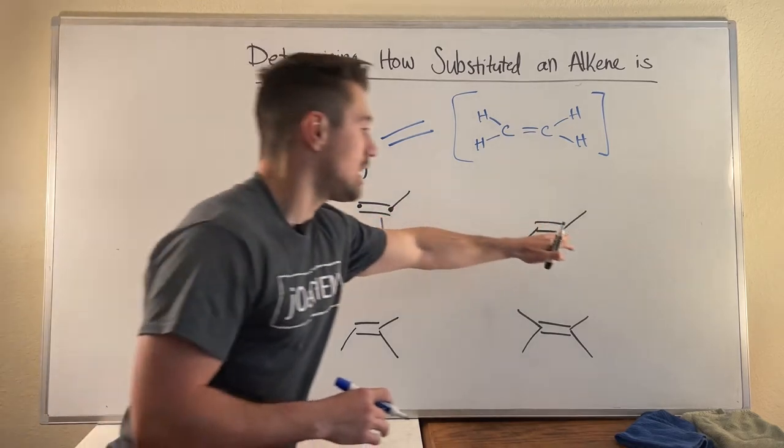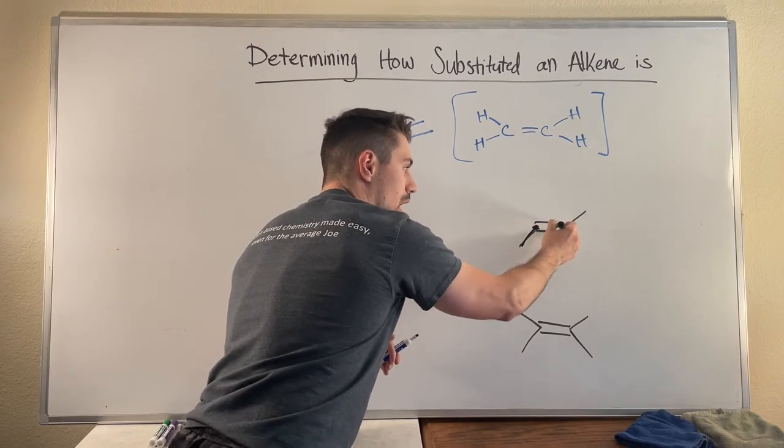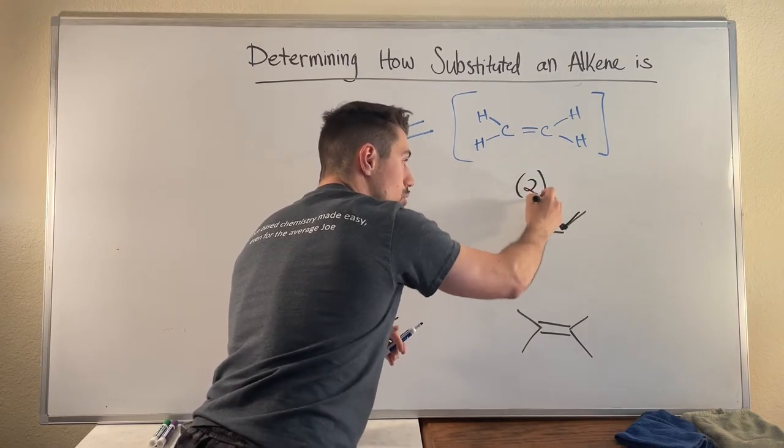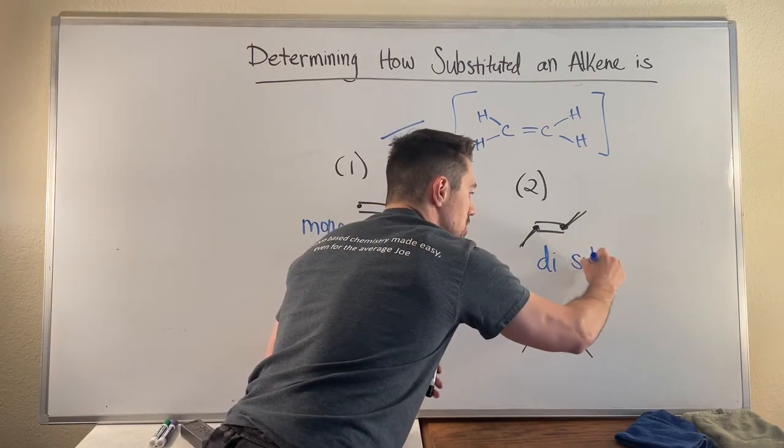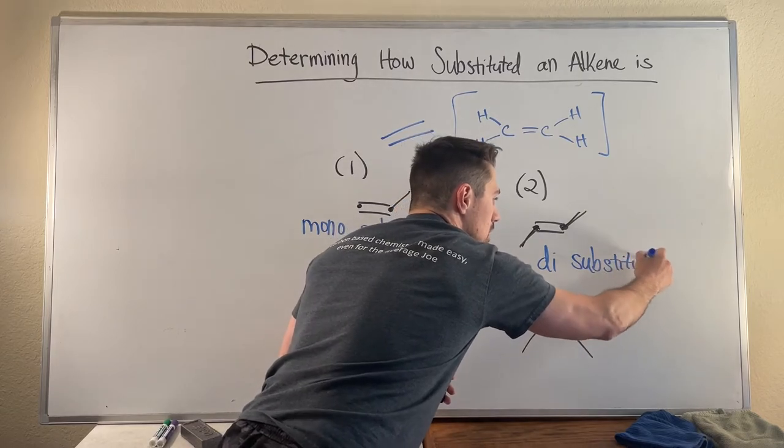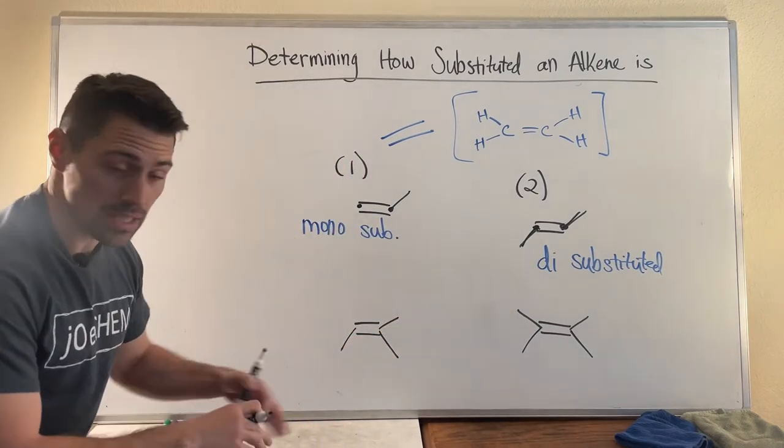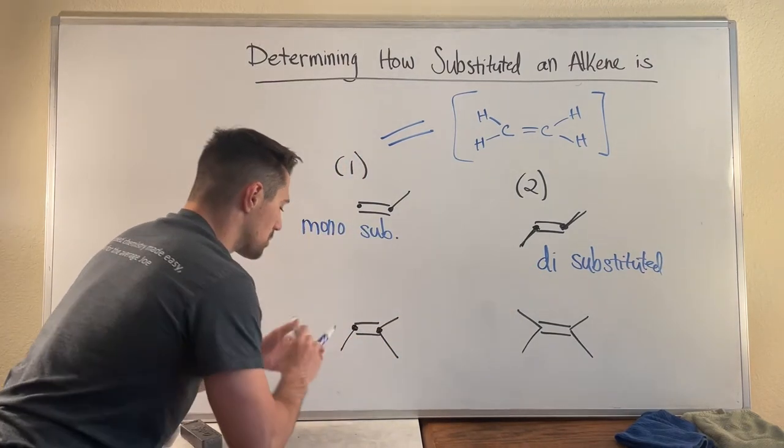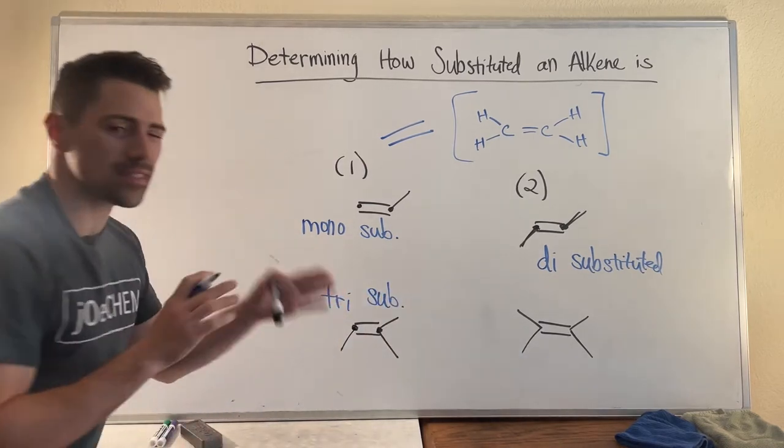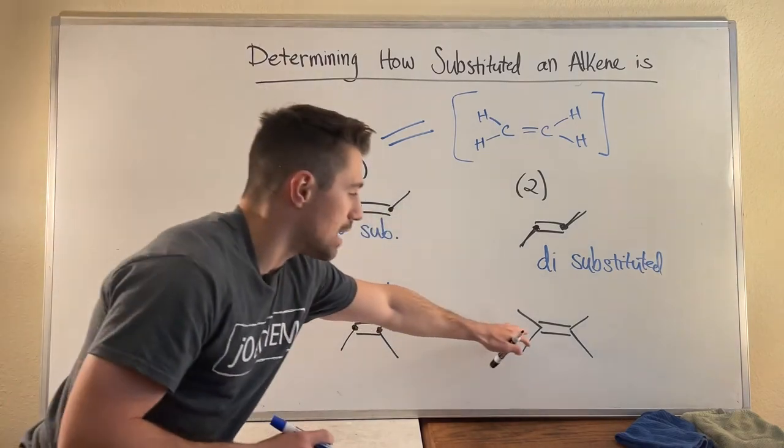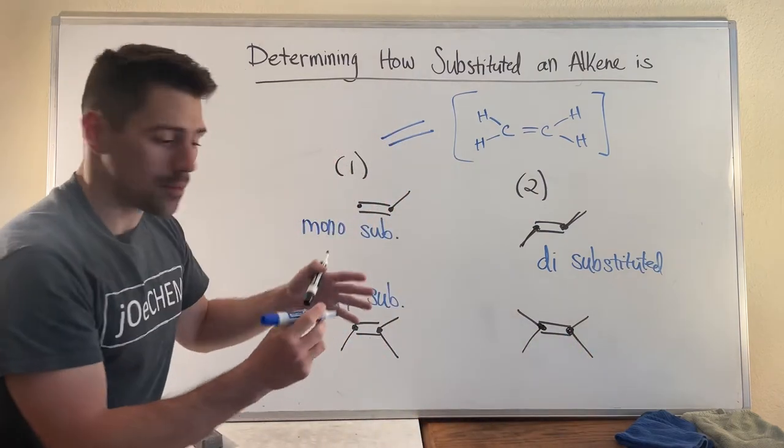Now if we look over here you can see on both sides of the double bond I have one carbon coming off of it here another carbon coming off of it here that brings us to two total carbons so I could call this a di substituted double bond. Now when you have three total carbons off your double bond you can refer to this as a tri substituted double bond, so the terminology being slightly different than the primary secondary tertiary. And last but not least over here with four total carbons off of your double bond you can call this a tetra substituted double bond.